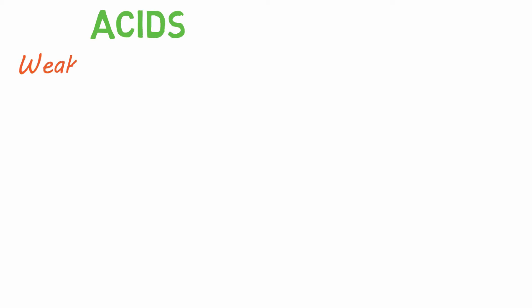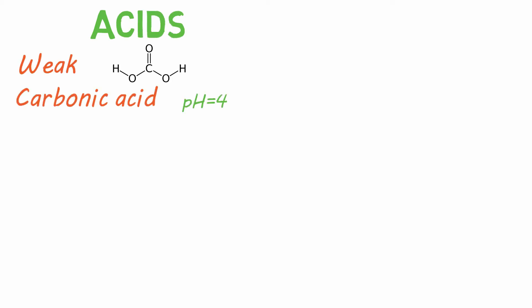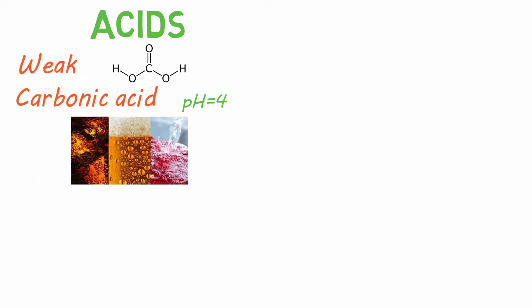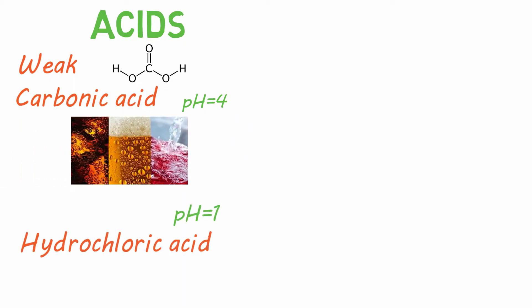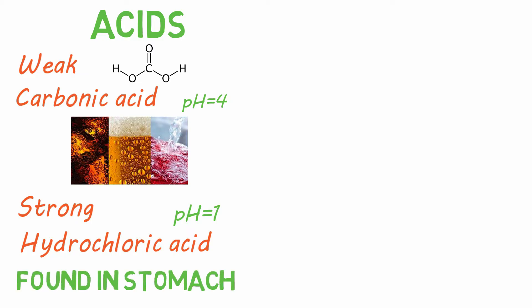An example of a weak acid is carbonic acid, which has a pH of 4 and can be found in carbonated beverages. Hydrochloric acid has a pH of 1 and is a strong acid. This is the acid in your stomach that helps with digestion.